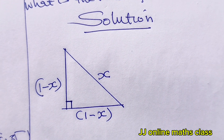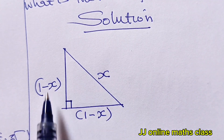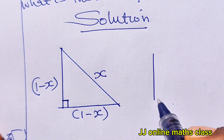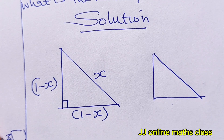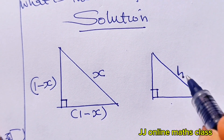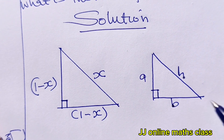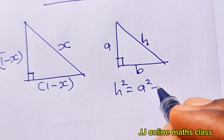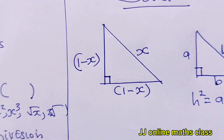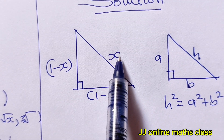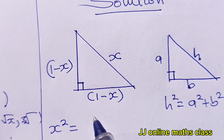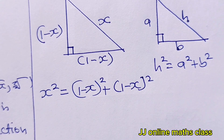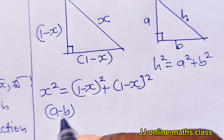Since we have a right angle triangle, we can use the Pythagorean theorem to solve for x. The Pythagorean theorem states that for a right angle triangle with hypotenuse x and legs a and b: x² = a² + b². Back to our diagram, that means x² = (1 − x)² + (1 − x)².